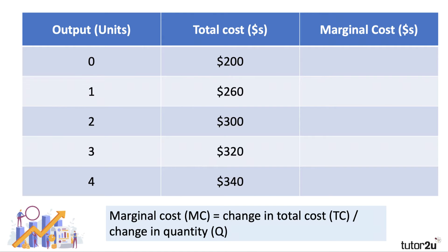In this situation, the firm is increasing output from zero to four. You'll notice here that they have some cost — $200 — even if they didn't produce any output. Economists call those fixed costs: costs you have to bear even if production is zero. As output goes up, cost goes up, because the variable costs of production are starting to increase.